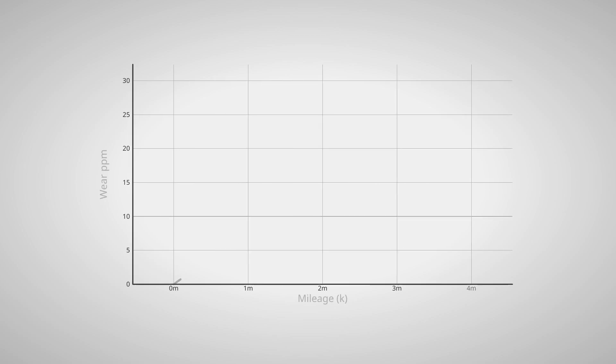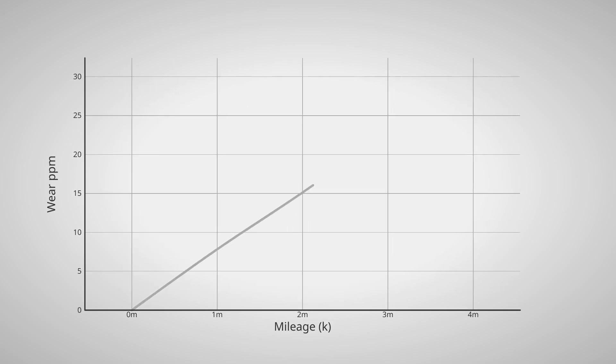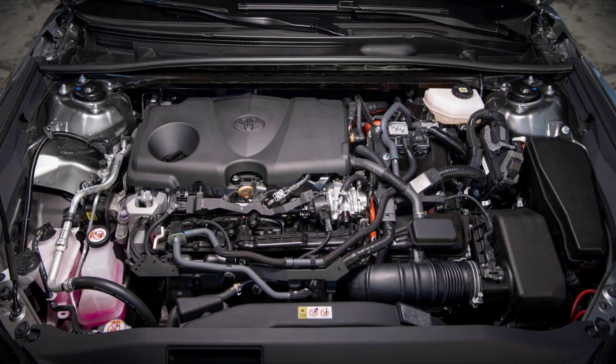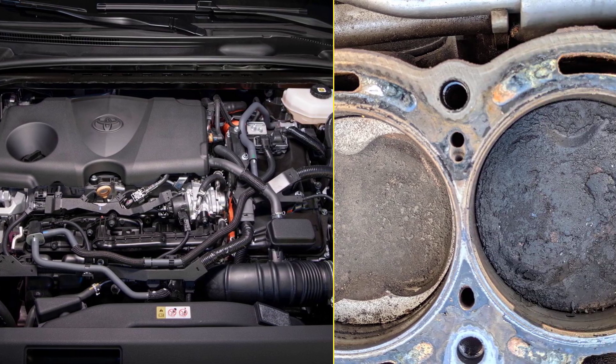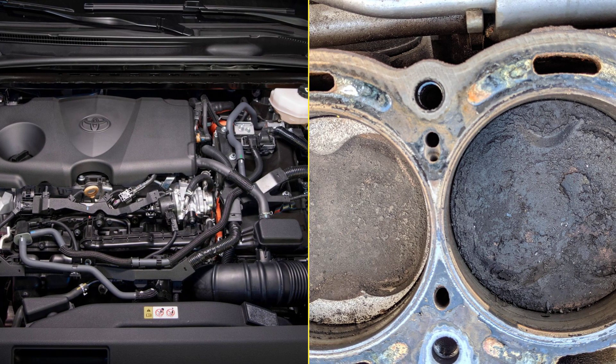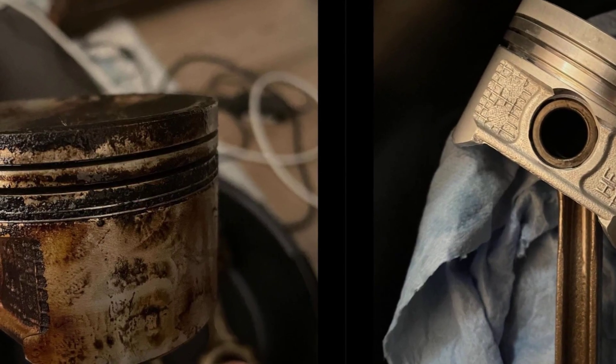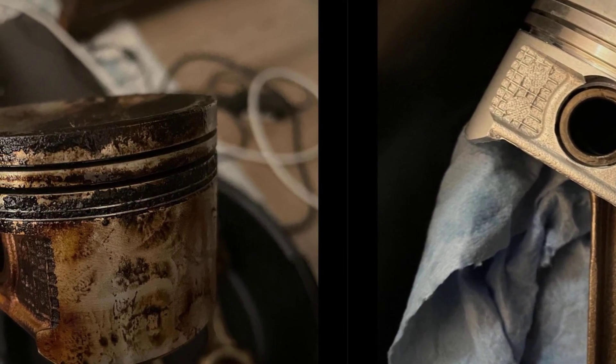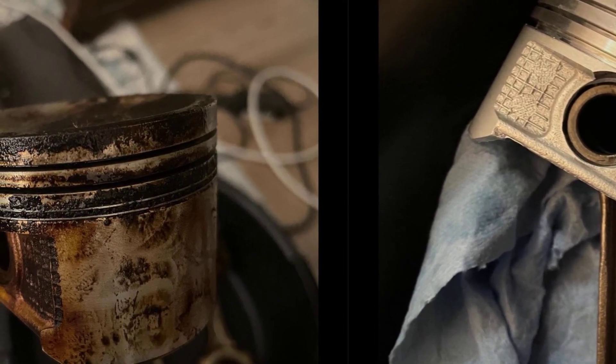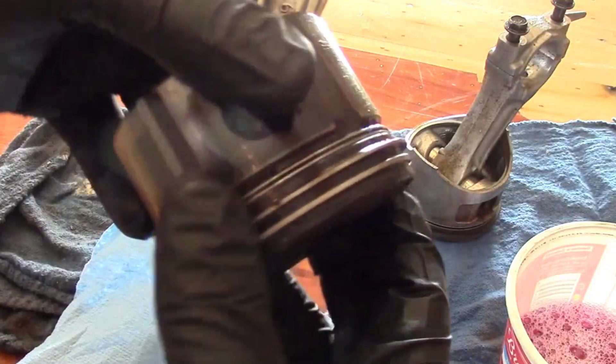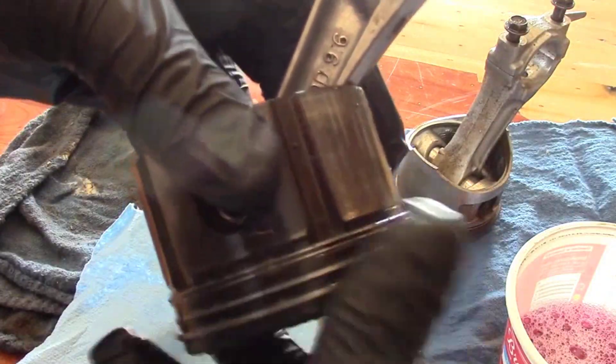Used oil analyses from these long intervals tell the same story: iron and copper levels stay low even at 10,000 mile drains. Compare that to another Camry of the same generation, fed a diet of bargain oil and stretched intervals. At just 130,000 miles, teardown photos reveal heavy carbon deposits, stuck rings, and thick sludge baked onto every surface.